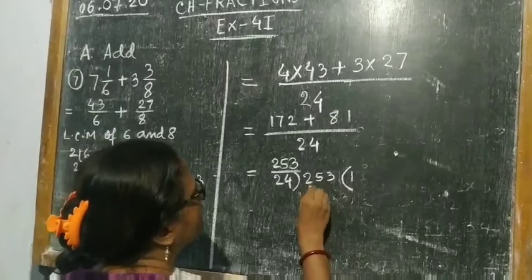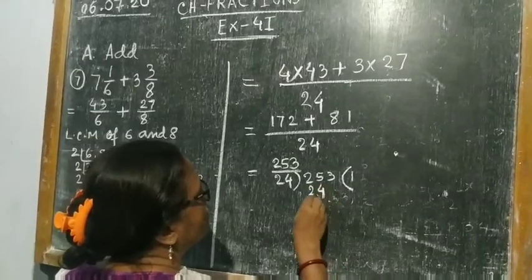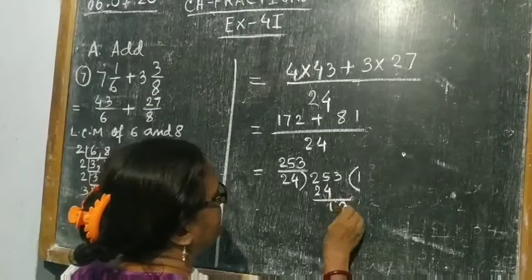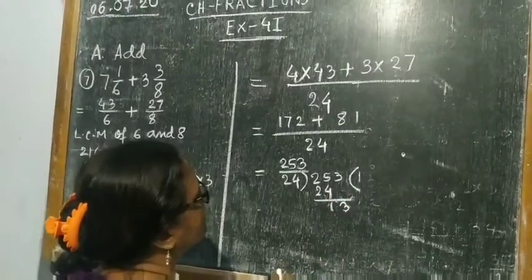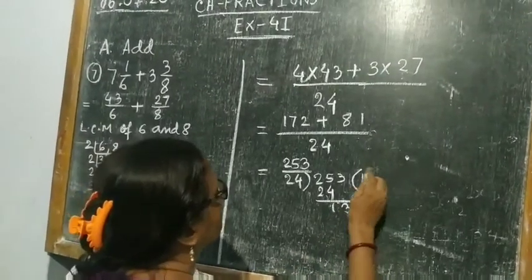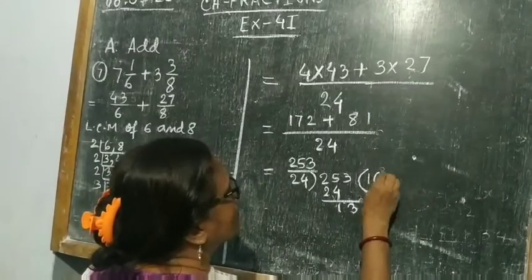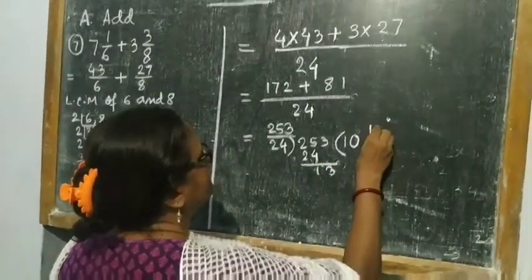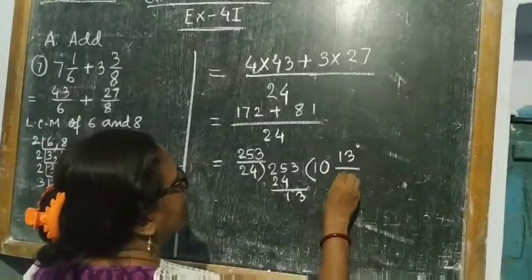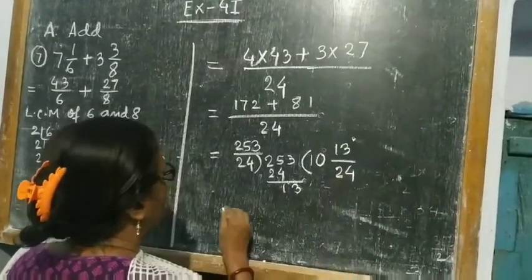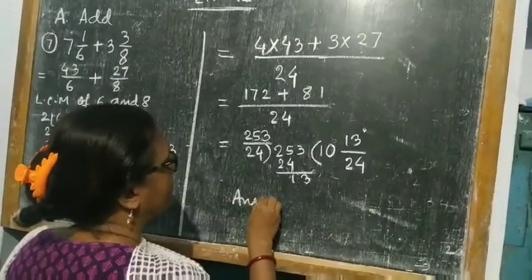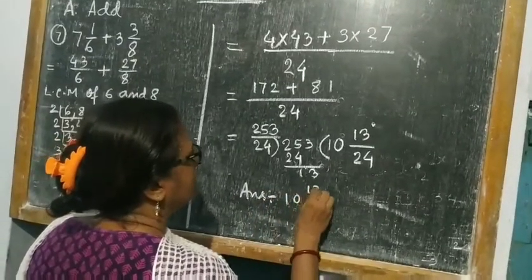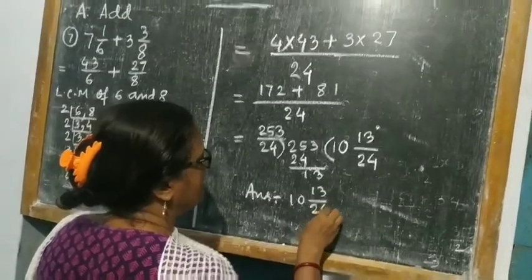So you divide 253 by 24. 24 into 25 goes once, 5 minus 4 is 1, bring down 3, giving 13. So the answer is 10 13/24.